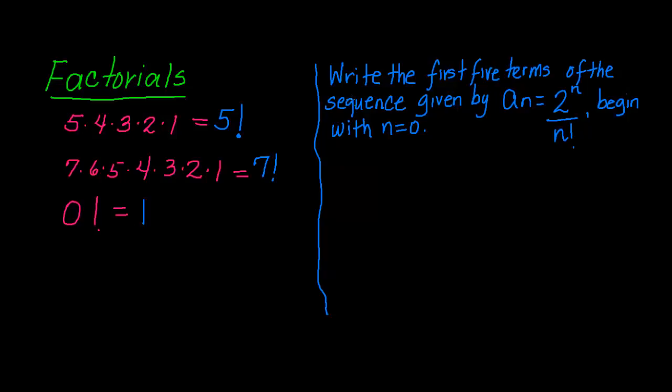In this example, they're asking you to write the first 5 terms of the sequence given by an = 2^n/n!. It tells you begin with n equal to 0. So we usually start with n equal to 1, but this time they want us to start with 0.